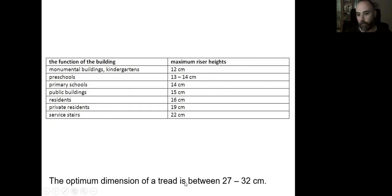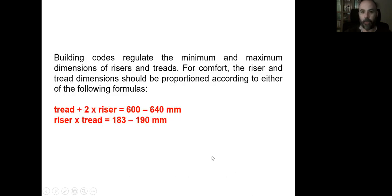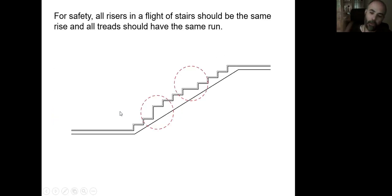The optimum dimension for a tread is 30 centimeters. So if you want to keep the pitch in an optimum angle, then we can use this formula here. We need to add the width of the tread to two times of the riser height. And this calculation should be equal to 600 to 640 millimeters. If we keep it between these numbers, then we will have a normal pitch stairs.